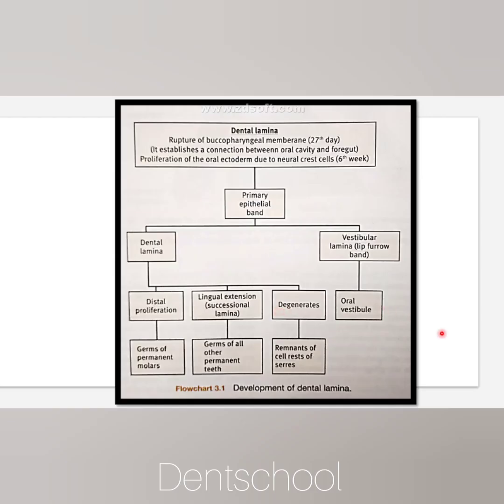This is a brief summary of the development of dental lamina. As we discussed in the last video, rupture of the buccopharyngeal membrane results in the connection between the oral cavity and foregut. Proliferation of the oral ectoderm gives rise to the primary epithelial band, which is further divided into dental lamina and vestibular lamina.